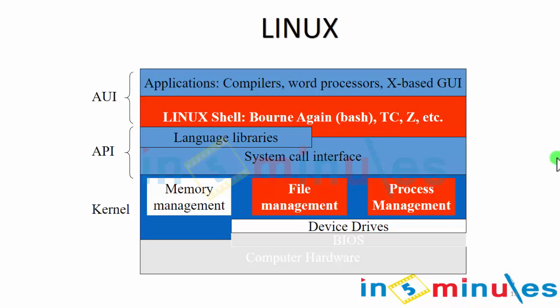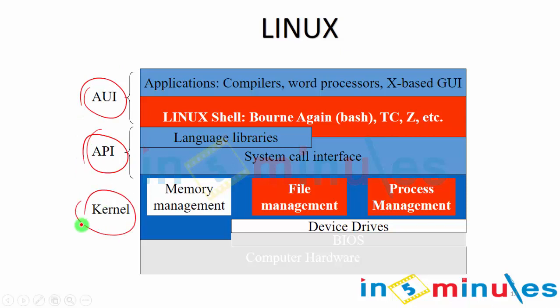In the current architecture, as you can see, we have three basic layers to work with: the UI, API, and the kernel layer. This is the architecture of the complete operating system. The UI — Application User Interface — is basically responsible for allowing development and integration of user applications to the Linux core, providing a platform for users.